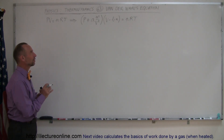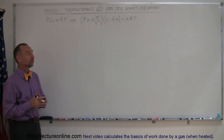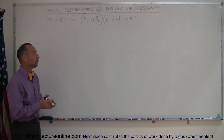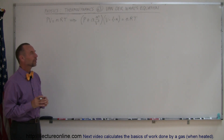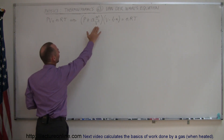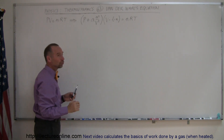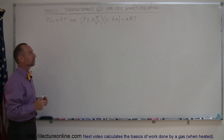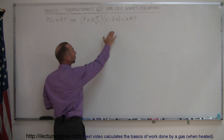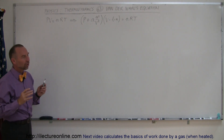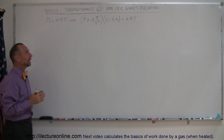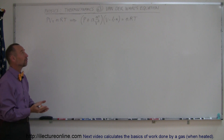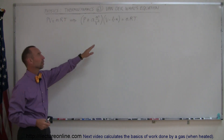Welcome to Electron Line. Our next topic is the Van der Waals equation, which is the more realistic version of the PV equals NRT ideal gas equation. In the Van der Waals equation, we're adjusting for two things: first, the pressure change due to electrical force interactions between molecules, and second, the fact that molecules actually take up some volume, which becomes significant when the density is very high.